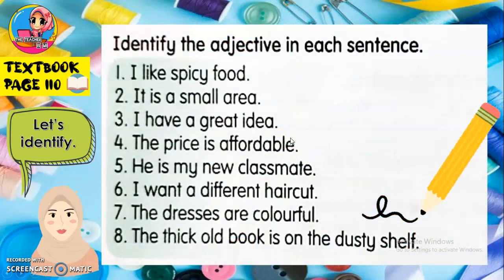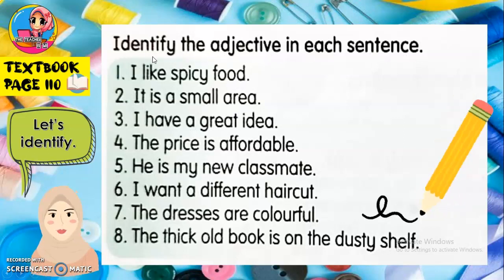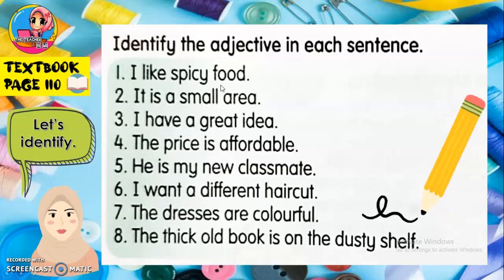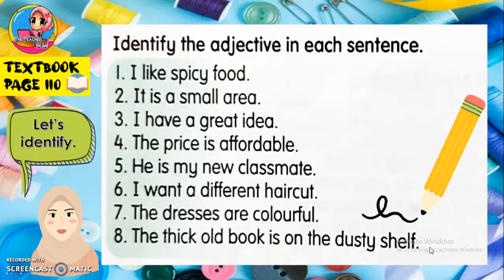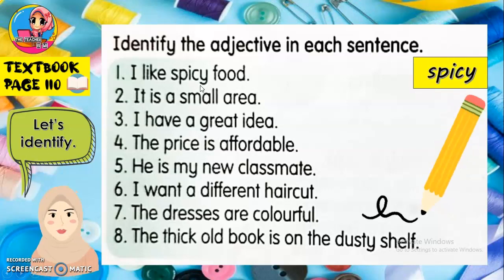This is your first exercise. Identify the adjective in each sentence — kenal pasti adjective dalam ayat di bawah. Read the sentence and write out the adjective you find. Number one: 'I like spicy food.' Two: 'It is a small area.' Three: 'I have a great idea.' Four: 'The price is affordable.' Five: 'He is my new classmate.' Six: 'I want a different haircut.' Seven: 'The dresses are colorful.' Eight: 'The thick old book is on the dusty shelf.' Write the adjectives you find in the box provided.